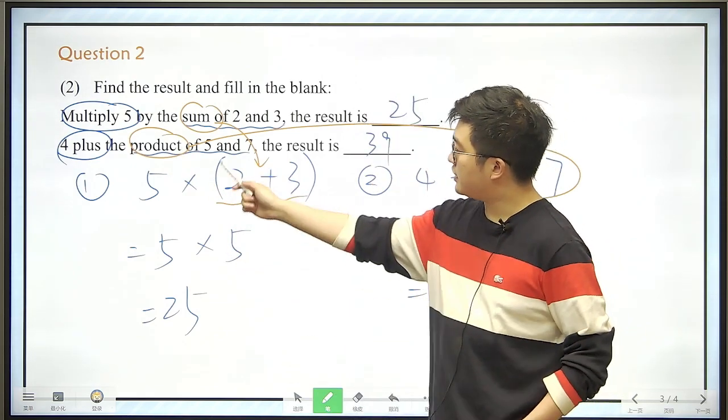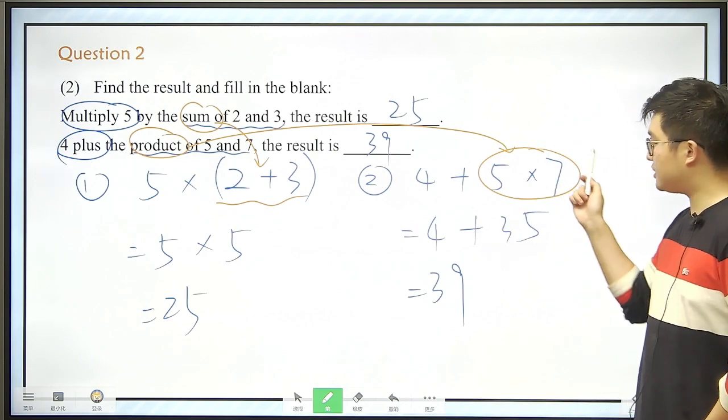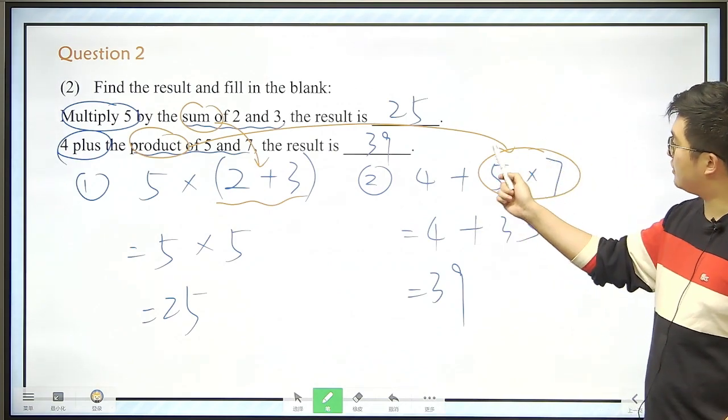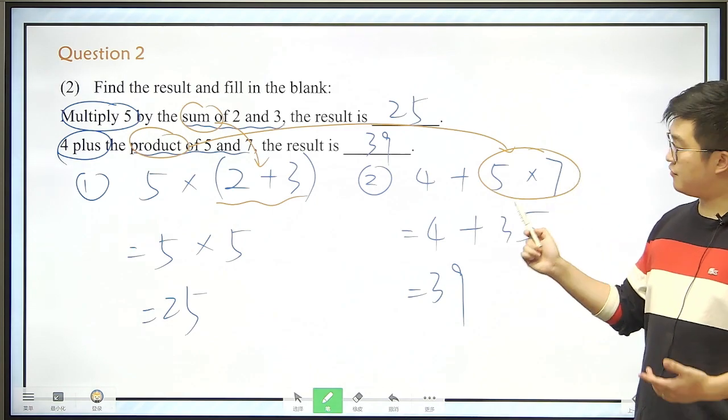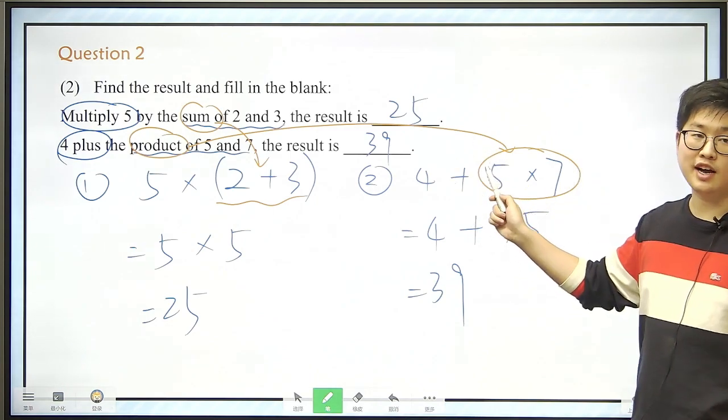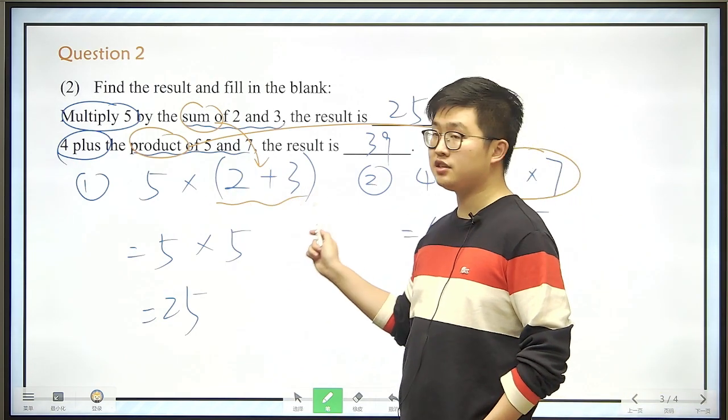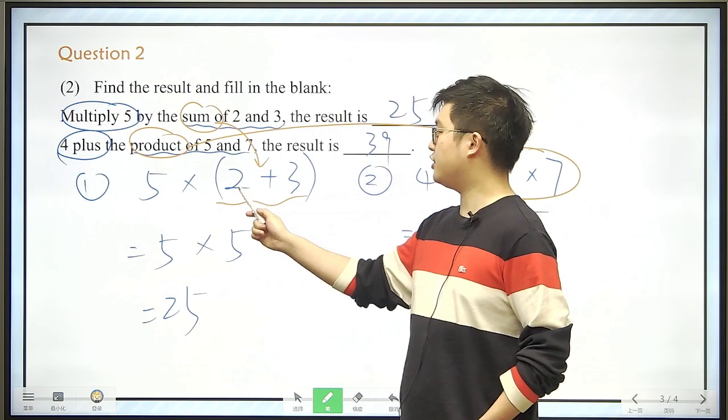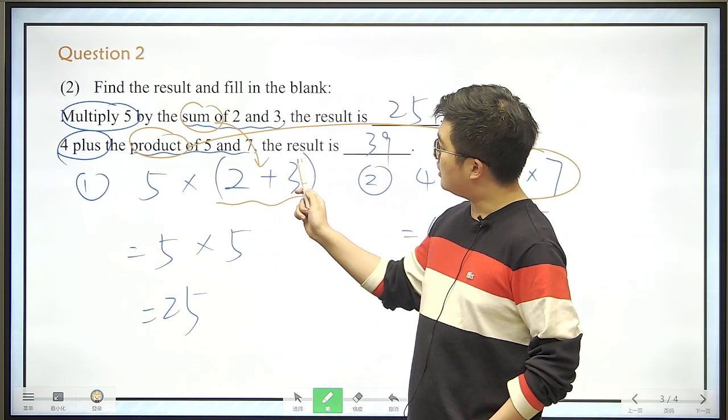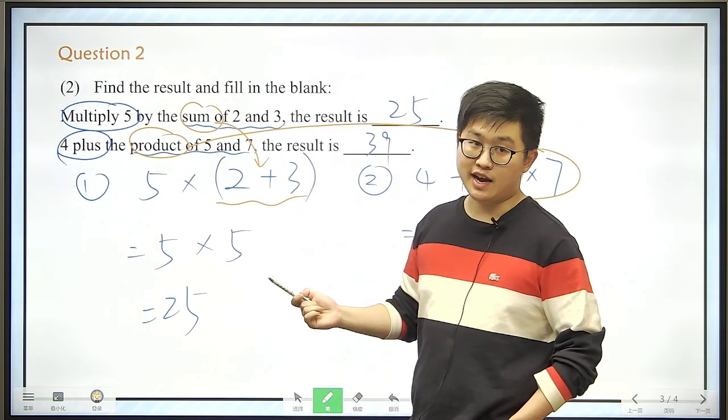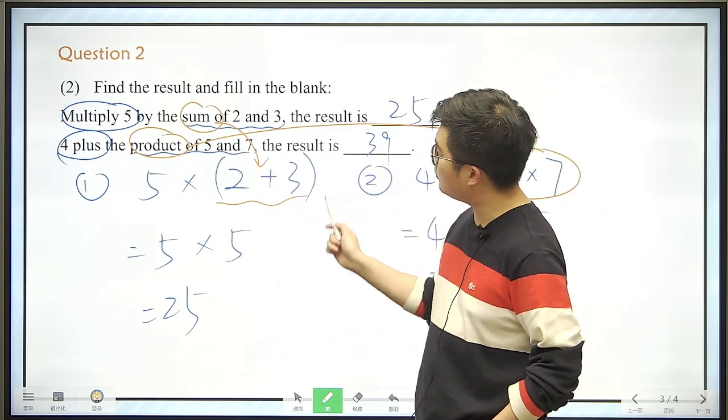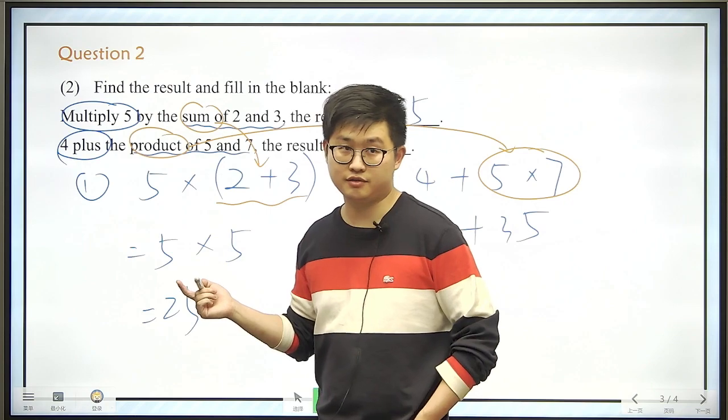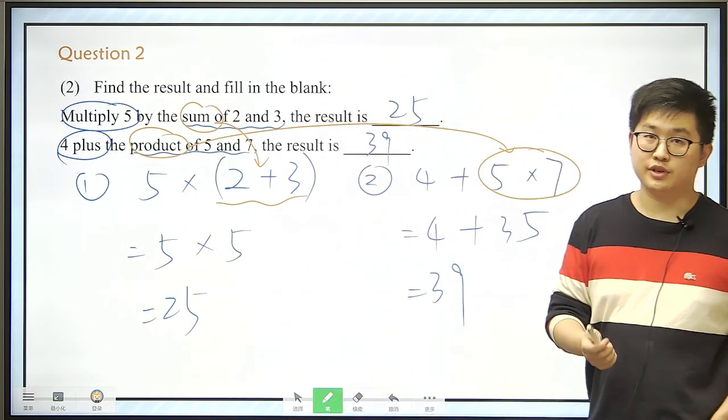So we need brackets here, or we don't need brackets there, here, because we should calculate 5 times 7 before the addition, right? But when it comes to something like this, we need brackets here, so that we just calculate 2 plus 3 first. Because if without the brackets, we should probably just calculate 5 times 2 first. So just pay attention to it.